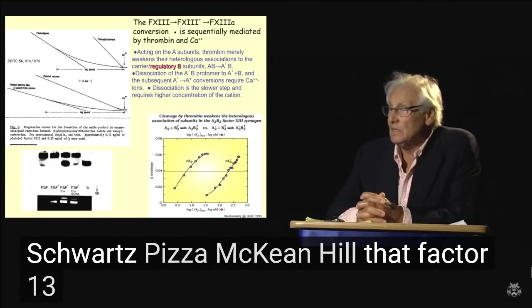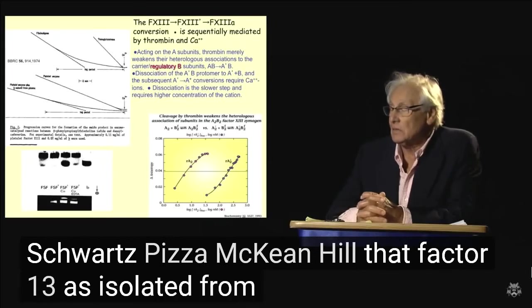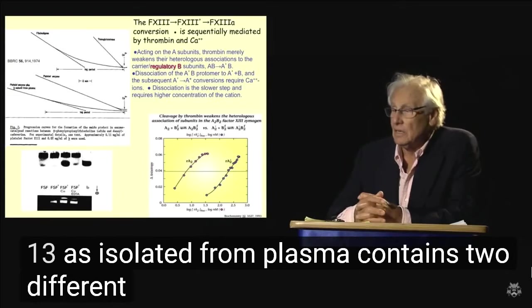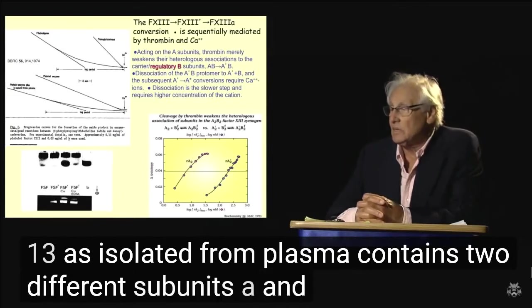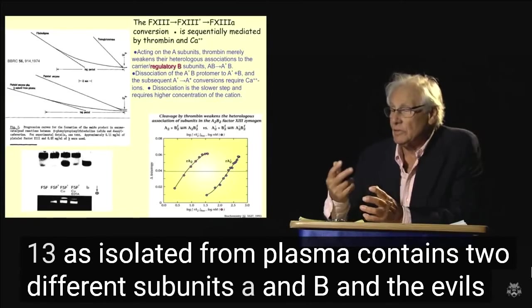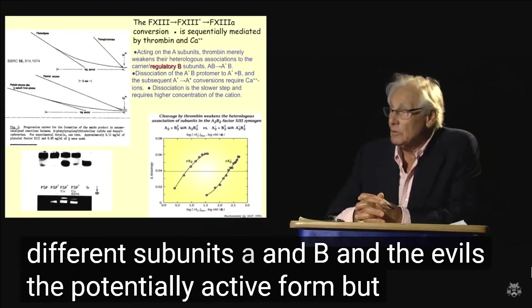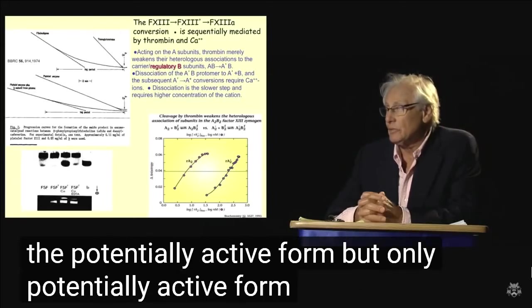Factor 13, isolated from plasma, contains two different subunits, A and B, and the A was the potentially active form. But only potentially active.